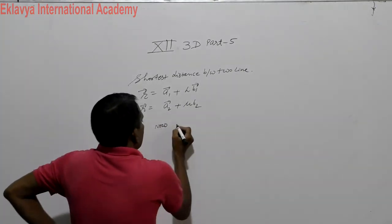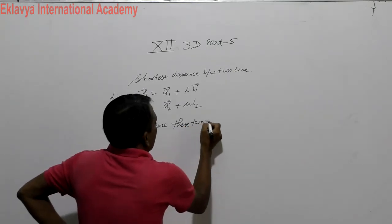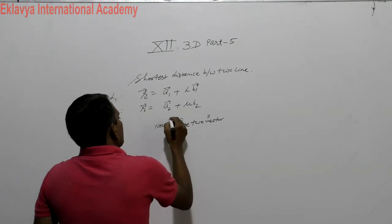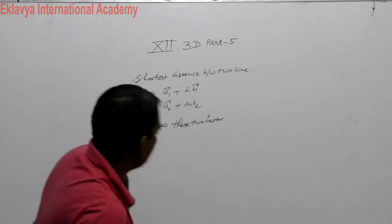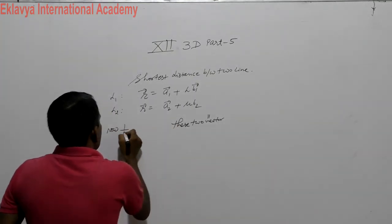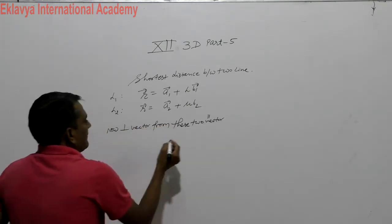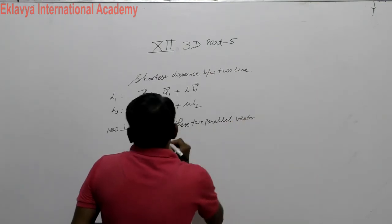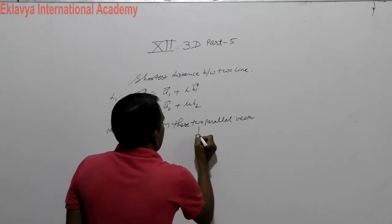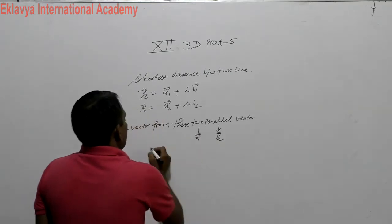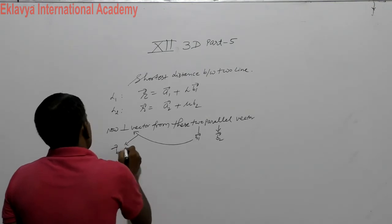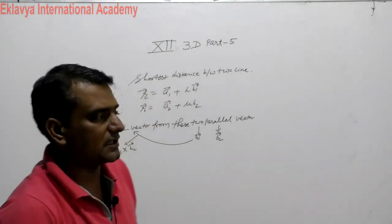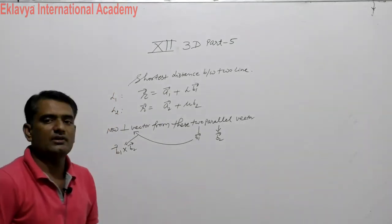Now these two lines have direction vectors B1 and B2. The perpendicular vector to these two direction vectors can be found using the cross product. We studied the cross product: whenever a perpendicular vector of two vectors needs to be calculated, it can be calculated by the cross product. So we calculate B1 cross B2.